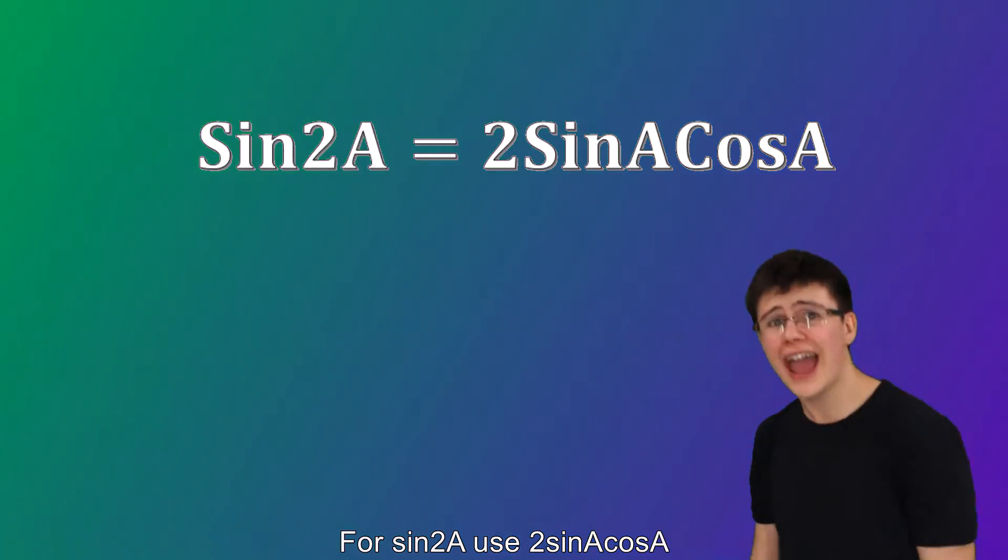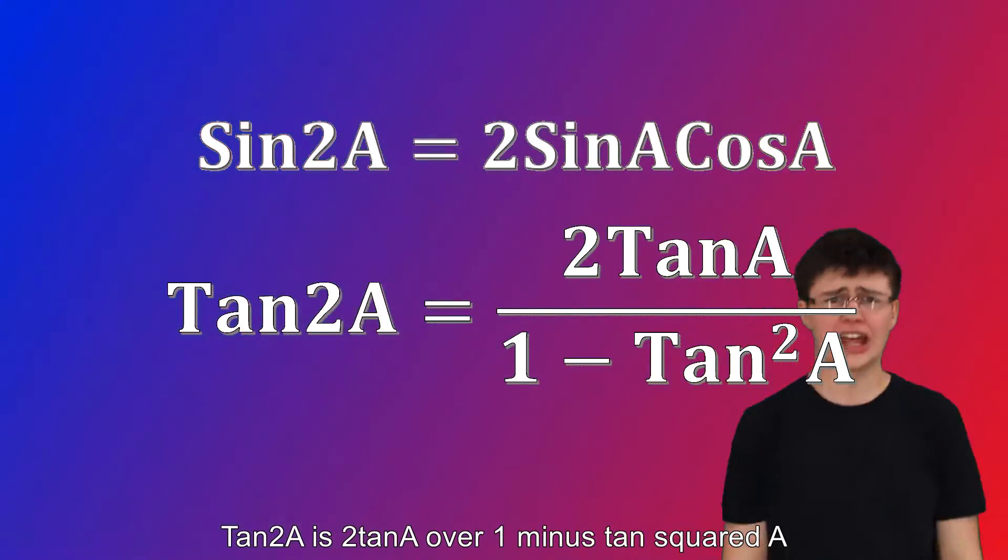For sine two A, use two sine A cos A. Tan two A is two tan A over one minus tan squared A.